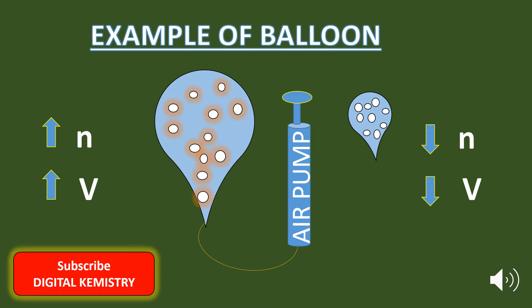To understand Avogadro's Law more clearly, let's take an example of a balloon from daily life. As you can see, I have a balloon with some gas in it — a certain amount of gas occupying a volume V. In the first balloon, I filled some more air into it. As you can see, when I filled air into this balloon, the amount of gas inside the balloon increases, which also increases the volume of the gas. So n increases, which also increases V.